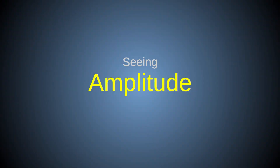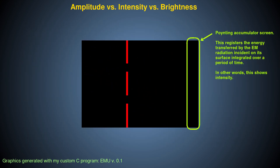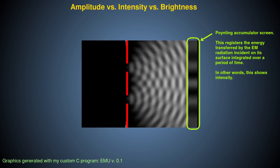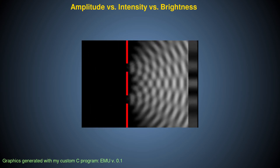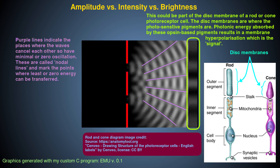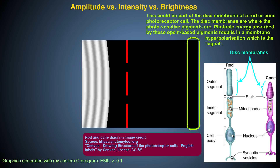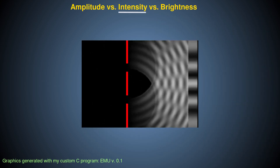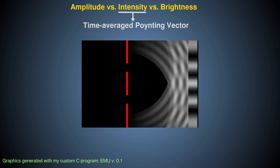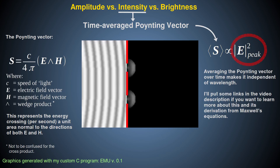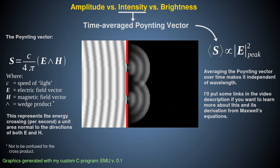We cannot see the amplitude fluctuations of the electric or magnetic field strengths directly. However, the more extreme the amplitude fluctuations of a wavefront of EM radiation, the more energy can be transferred to objects such as the cone photoreceptor cells of our retina or the sensor pixels of a camera chip. This measure of energy transfer is called the intensity of the EM radiation, and it is modelled mathematically by the time-averaged Poynting vector, which is related to the amplitude squared of the electric field component.